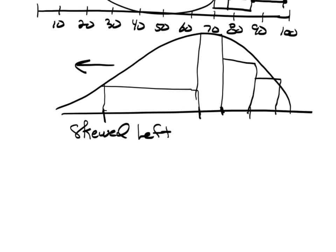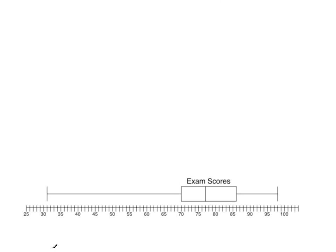Very quickly, the same data — let's take a look at a box and whisker plot created using TC Stats. This would be the minimum, this would be Q1, the median, Q3, and the max.